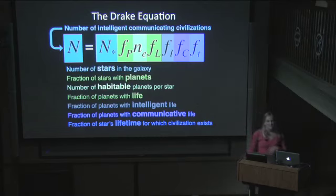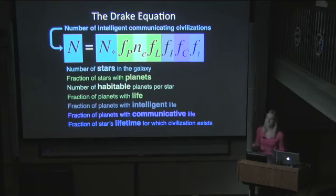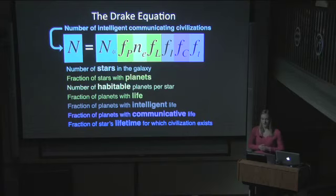As an astronomer, I feel very comfortable with the first two or three terms, but I really have no idea what values we should plug in for f_l, f_i, f_c, and L. I hope that in the future, biologists and chemists and astronomers can work together to come up with reasonable answers for things like the fraction of planets that have life and the fraction that have intelligent life. But for now, I'm going to present a red dwarf Drake equation in which we can estimate the number of potentially habitable planets orbiting red dwarfs in the galaxy.